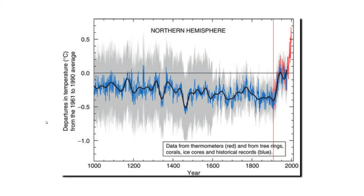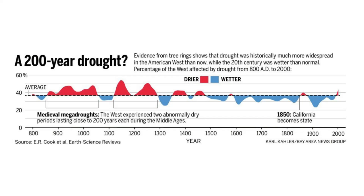According to proponents of global warming theory, when carbon dioxide levels are low and temperatures are low, the climate is very stable and safe. If they were correct, the climate should have been very nice from the year 1000 through the end of the 19th century. There shouldn't have been a lot of droughts during this 900-year period, but unfortunately for them, that doesn't seem to be the case.